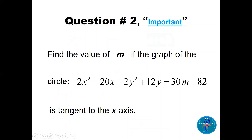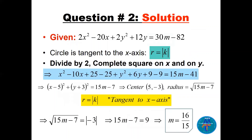Question 2: Find the value of m if the graph of this circle is tangent to the x-axis. First, complete the square. Divide everything by 2 because we need the leading coefficients of x² and y² to be 1. After dividing, take the x-coefficient 10, divide by 2 to get 5, square it to get 25, and add 25 to both sides.